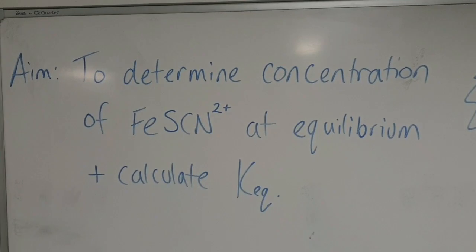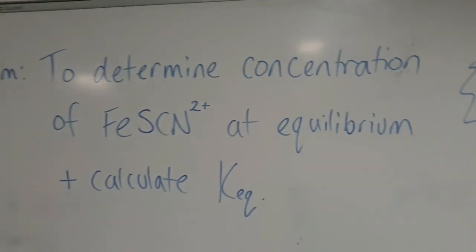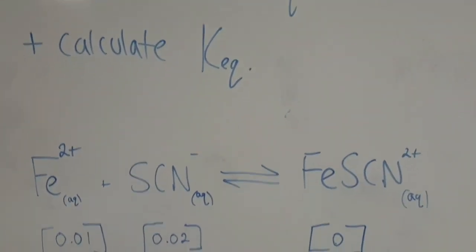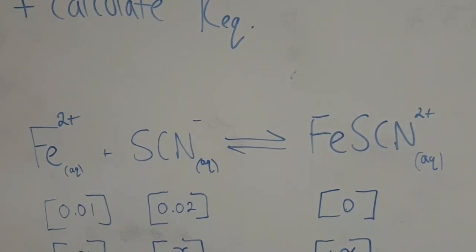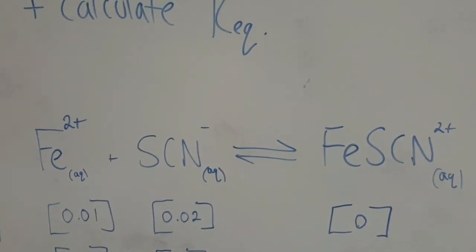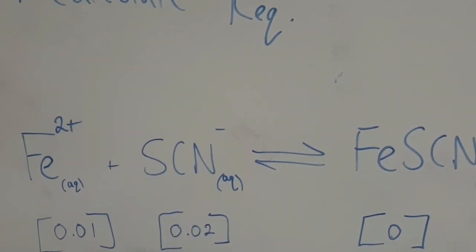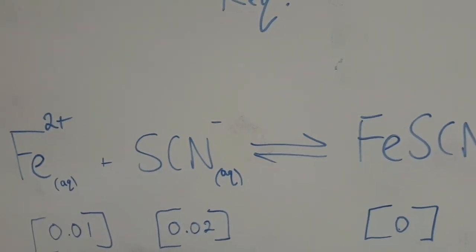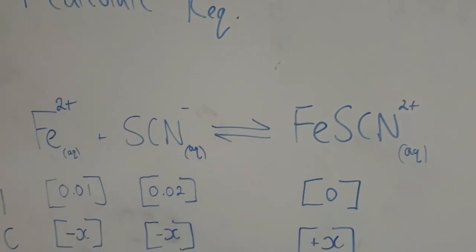Right, so we want to find out a concentration of, so this is an equilibrium reaction that we're going to look at today. It's iron thiocyanate. We're going to use iron chloride with potassium thiocyanate. We're only interested in the iron and the thiocyanate ion. And this is the reaction that makes a nice bloody red color.